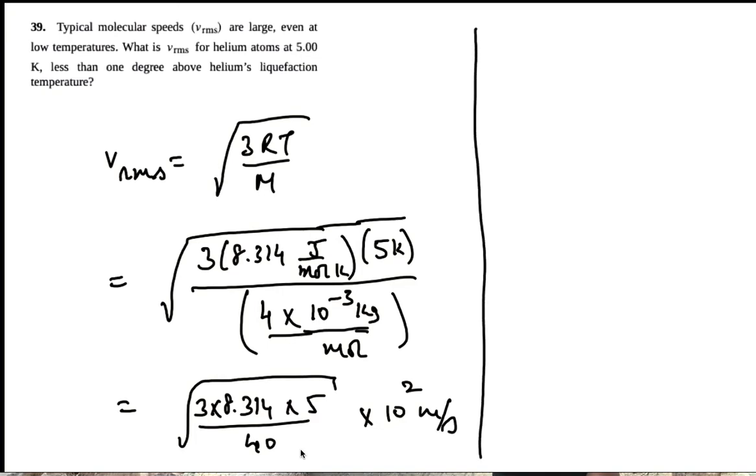So that's equal to V-RMS equals 177 meters per second.